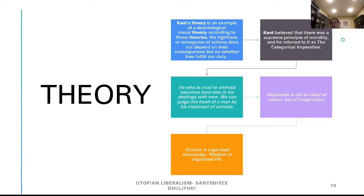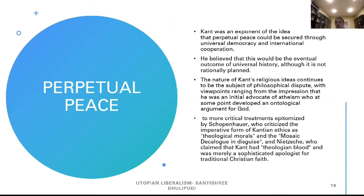Kant believed that the supreme principle is: 'He who is also cruel to animals becomes hard in his dealings with men. We can judge the heart of a man by his treatment of animals.' Happiness is not an ideal of reason, but of imagination. Science is organized knowledge; wisdom is organized life.